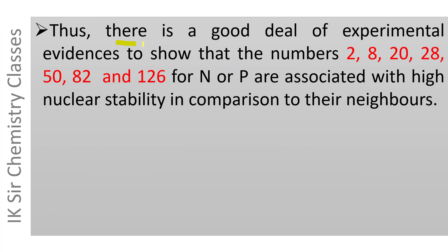Thus, there is a good deal of experimental evidence to show that the numbers 2, 8, 20, 28, 50, 82, and 126 for neutrons or protons are associated with high nuclear stability in comparison to their neighbors.